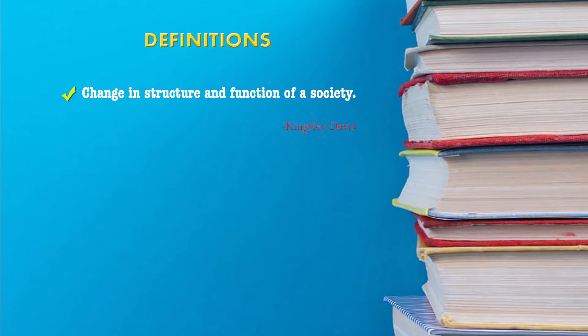As said by Davis, social change is nothing but change in the structure and function of society. Society is arranged hierarchically — we have different structures that have come into being because of various classes and castes. So whenever change happens such that an individual moves from one ladder of society to another, it comes under the category of social change.